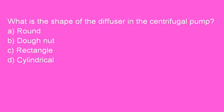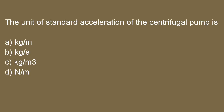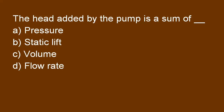Next question: What is the shape of the diffuser in a centrifugal pump? The shape of the diffuser is a taper nut. Option B is right. Next question: The major advantage of a centrifugal pump is that it is simple in construction. Option B is right. Next question: The unit of standard acceleration of the centrifugal pump is kilogram per meter cube. Option C is right. Next question: The head added by the pump is a sum of static lift. Answer B is right.